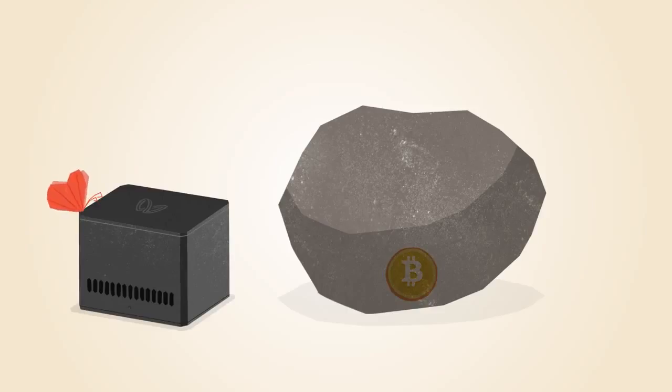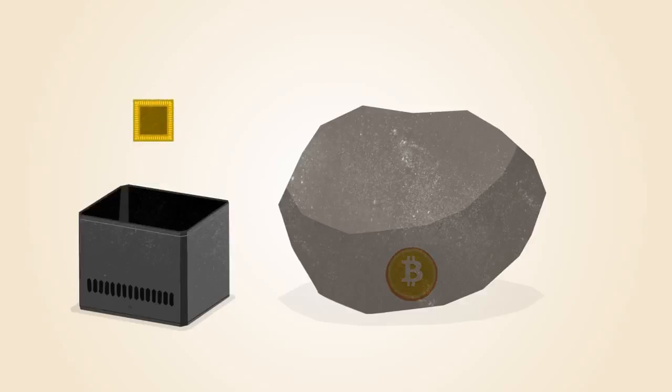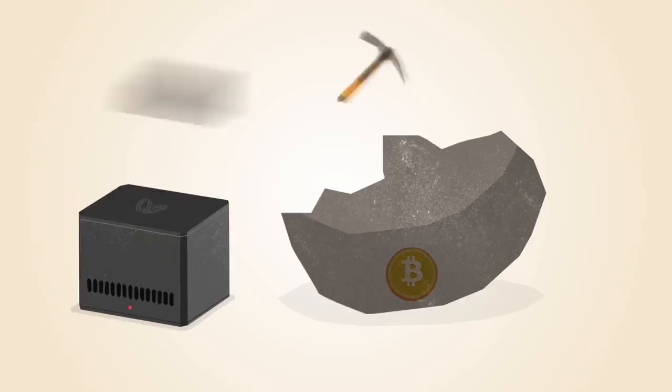The first commercial Bitcoin mining products included chips that were reprogrammed for mining Bitcoin. These chips were faster, but still power hungry.